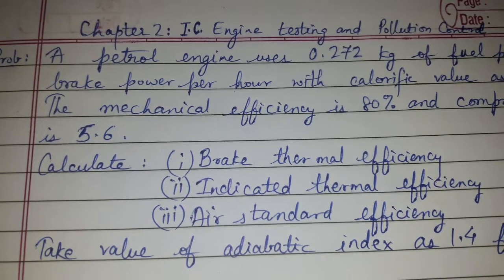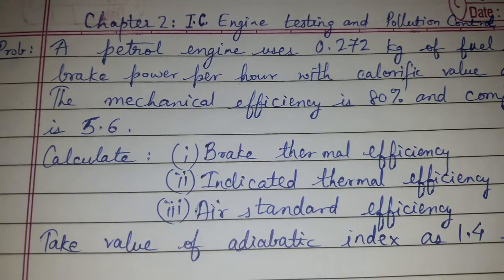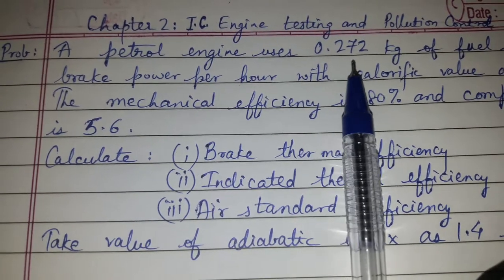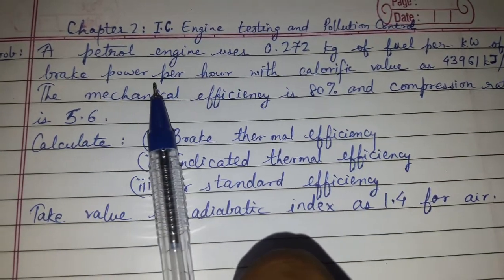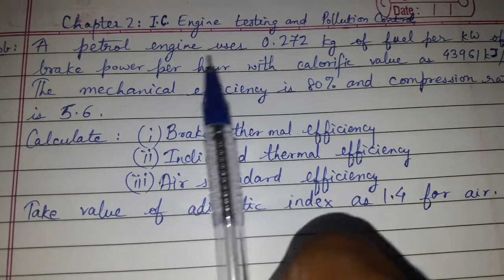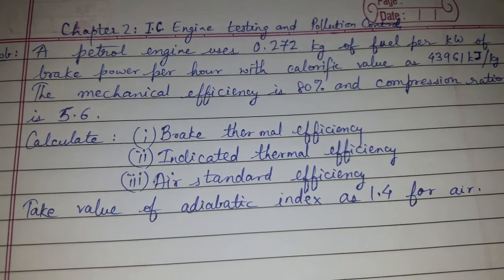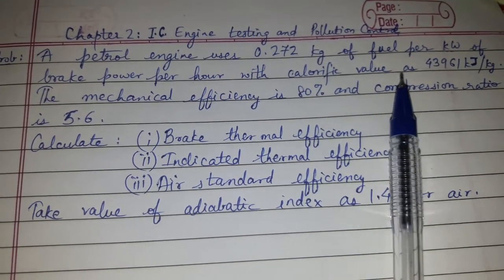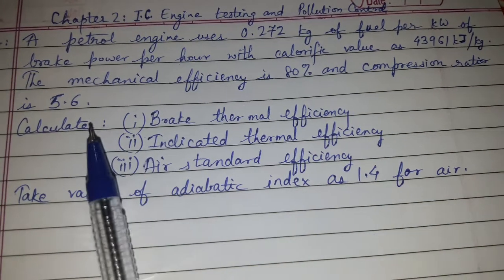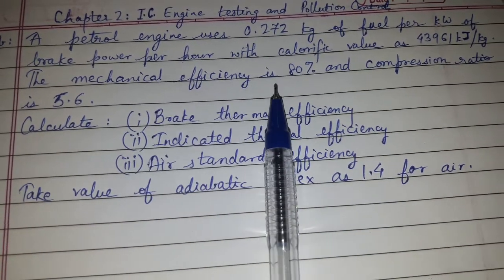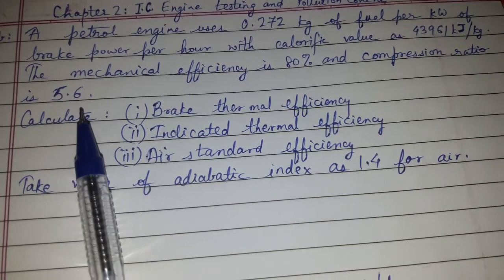Hi friends, today's topic of discussion is a problem from chapter number 2, IC engine testing and pollution control. A petrol engine uses 0.272 kg of fuel per kilowatt of brake power per hour. This is given as BSFC, with calorific value CV given as 43961 kJ per kg. The mechanical efficiency is given as 80%, that is 0.8, and compression ratio r is given as 5.6.